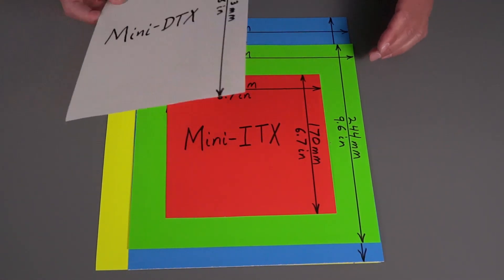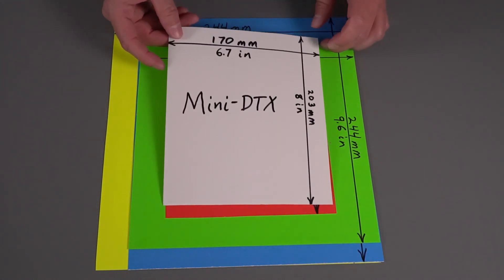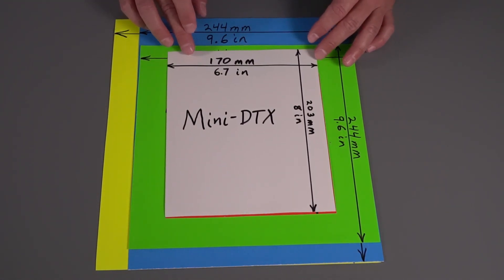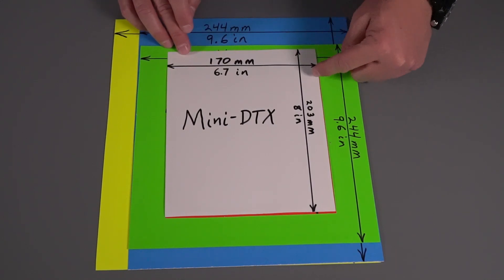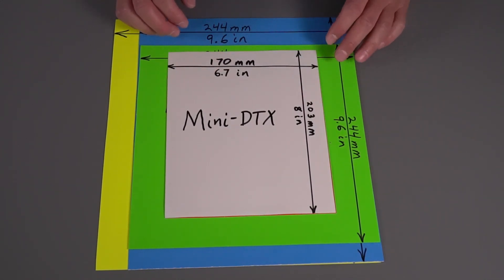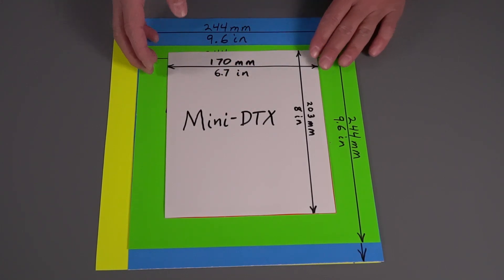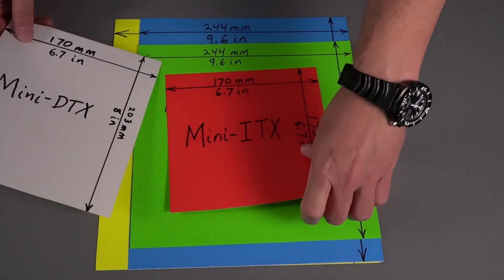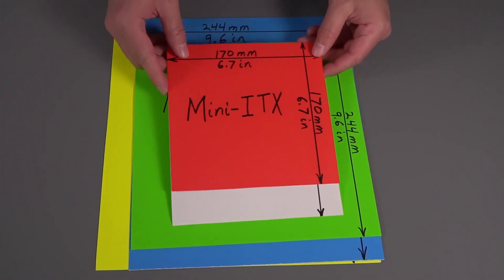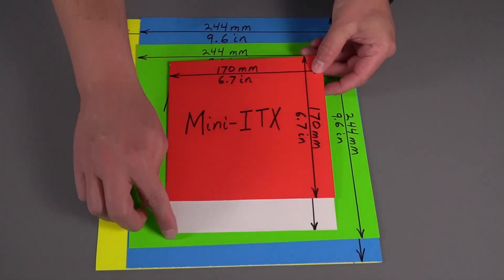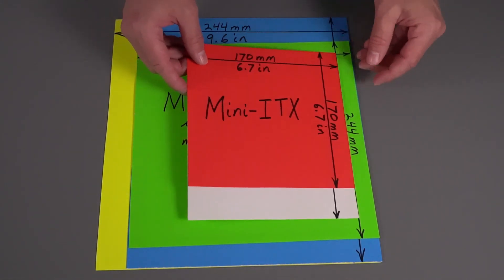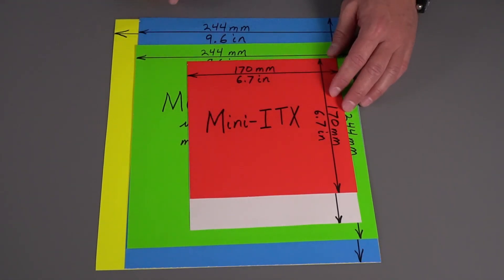Mini DTX has come to the fore recently. There is one motherboard available right now on the mainstream platform: 170 millimeters by 203 millimeters, or 6.7 by 8 inches. Mini DTX is usually written with the dash. It is exactly the same width as the Mini-ITX motherboard, but slightly longer in length to allow for a few extra features.